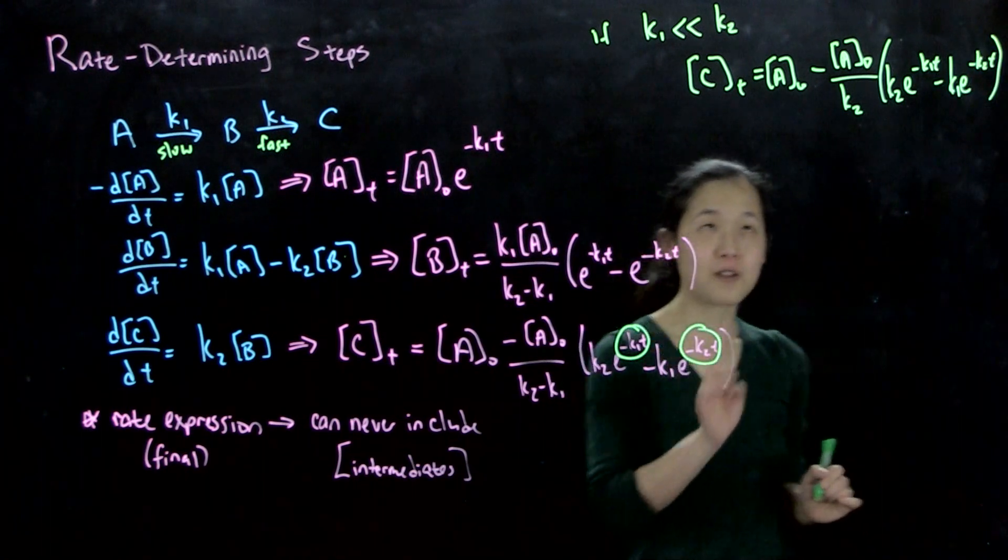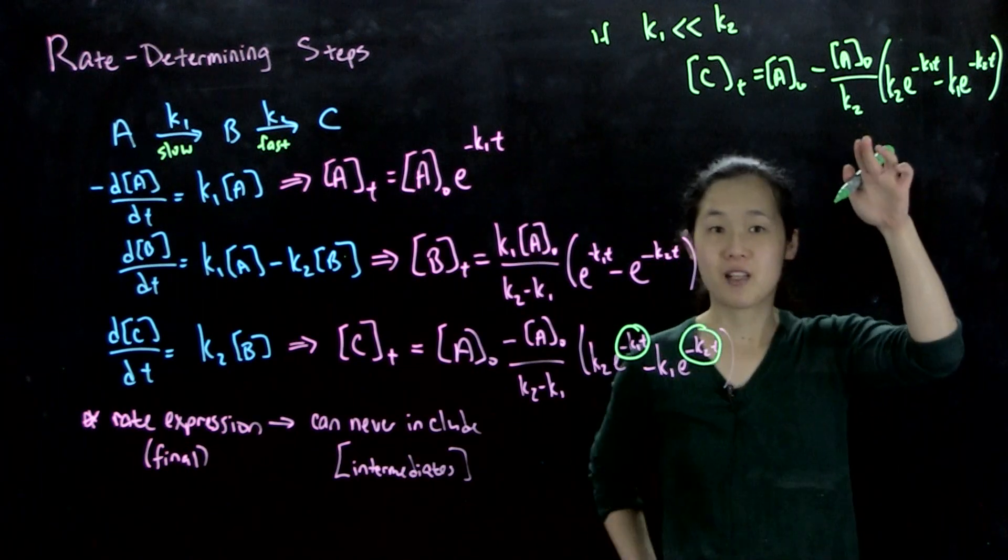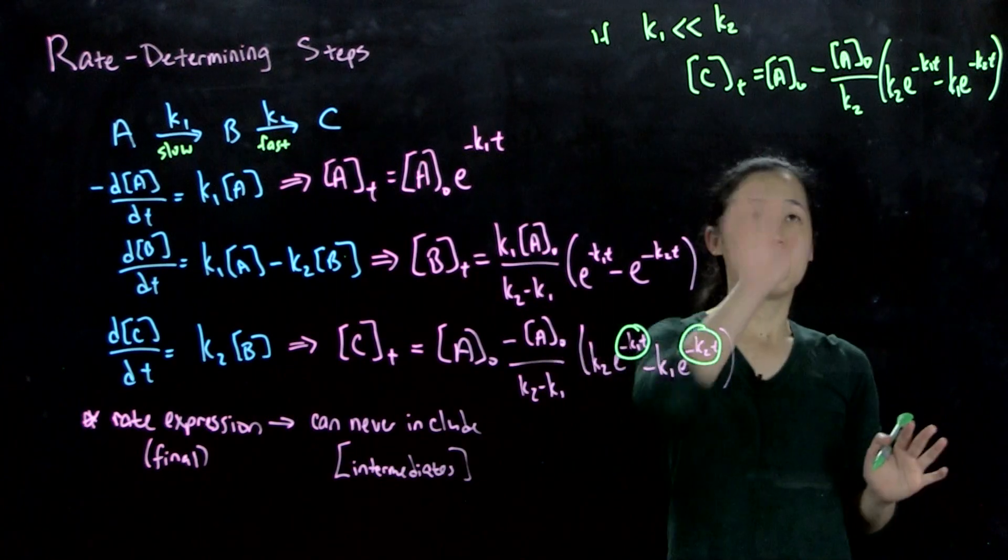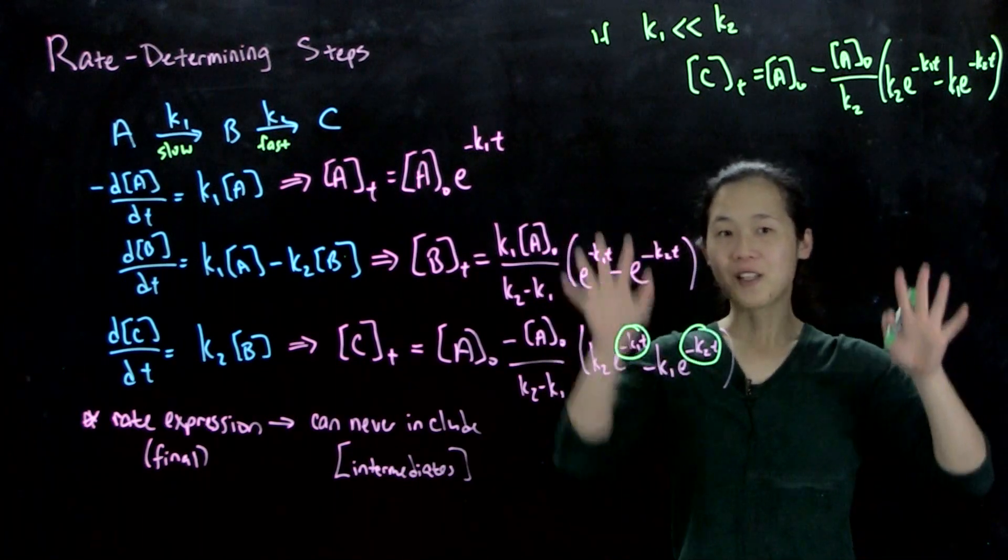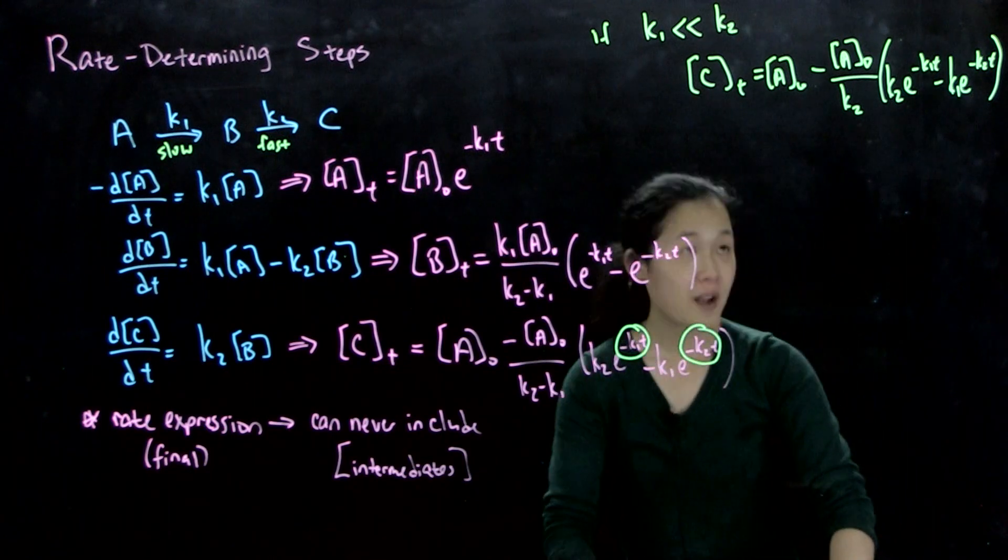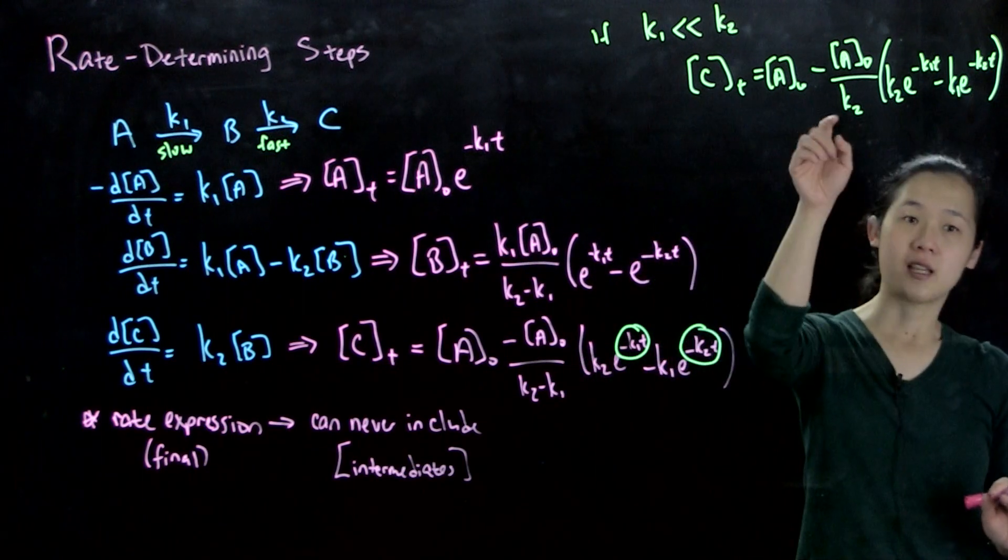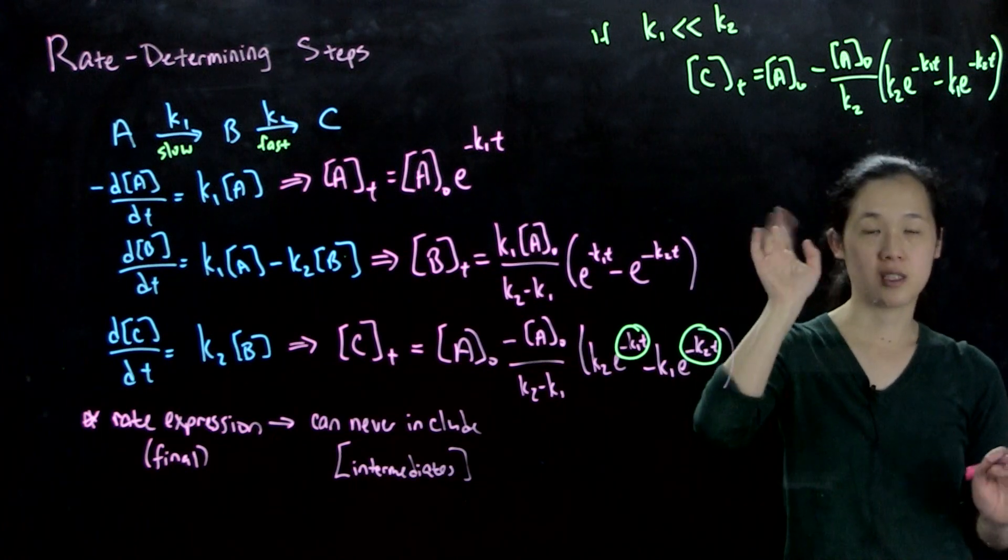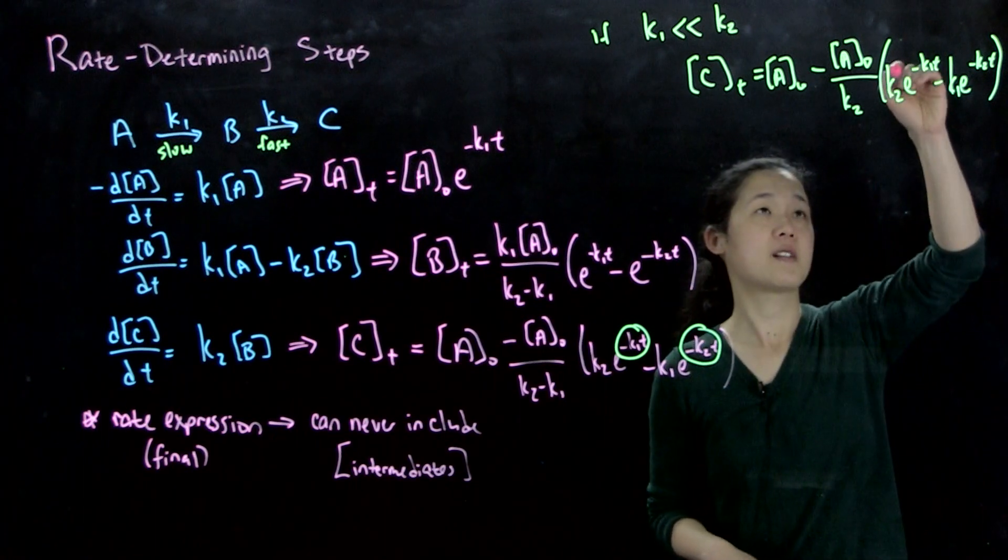Keep in mind that I can only do this approximation if it's in the denominator. The approximation here is that in the denominator, k2, k2 minus k1 is approximately k2. That's our current first approximation here. And then as a result, we can then cross out k2.